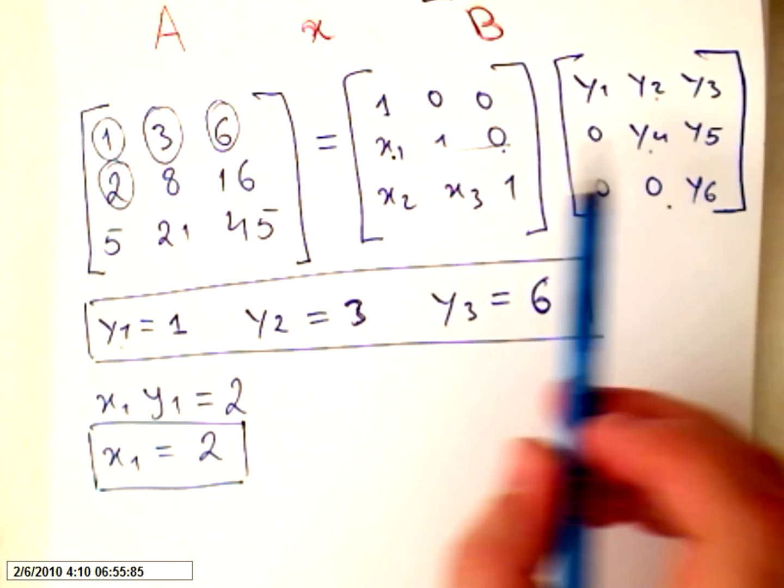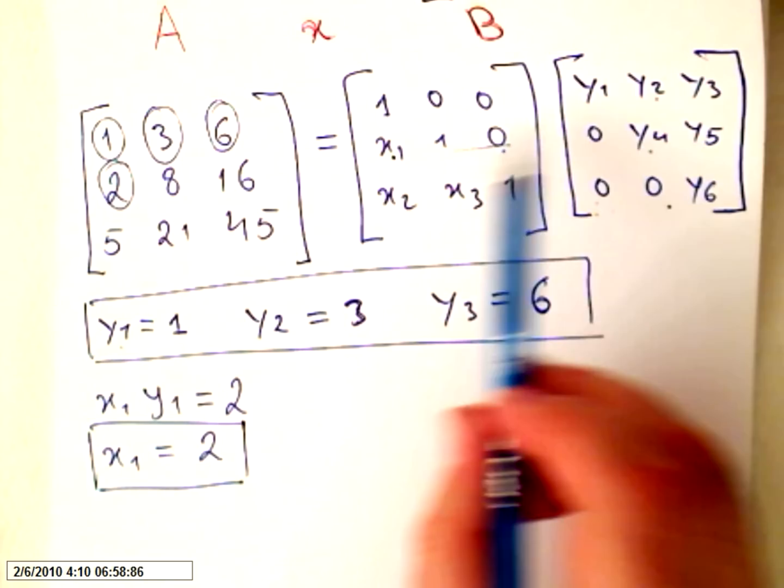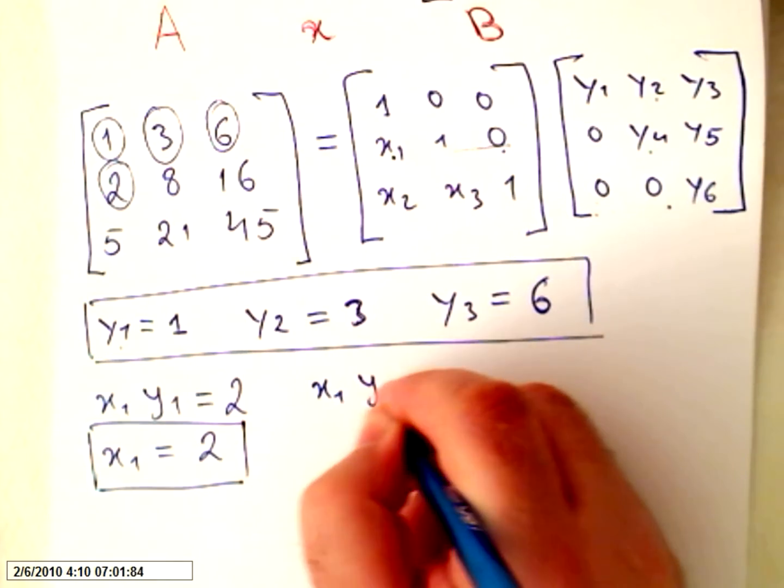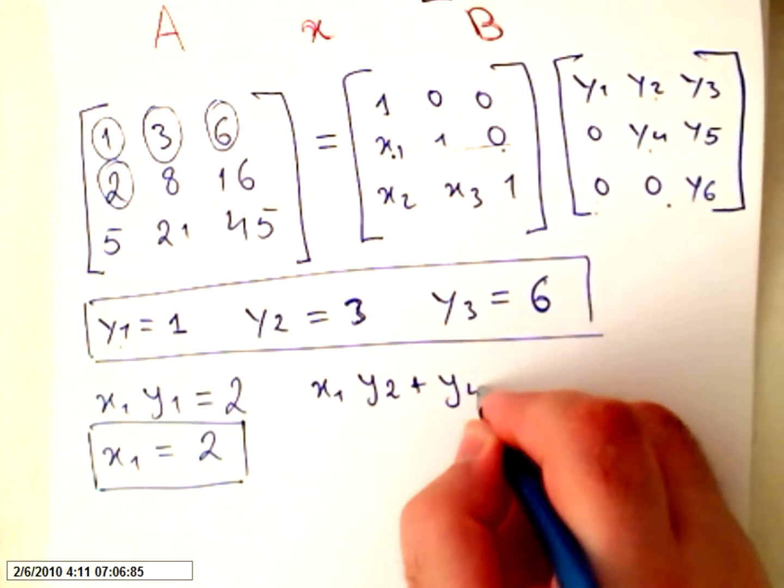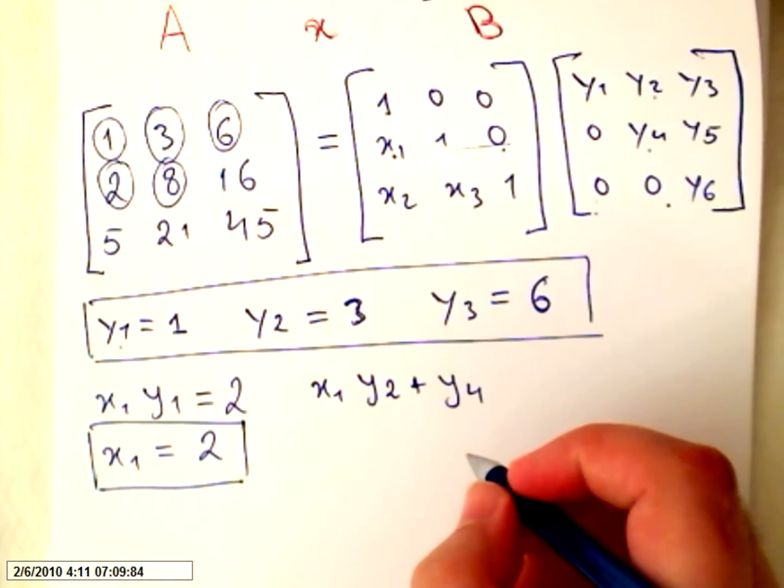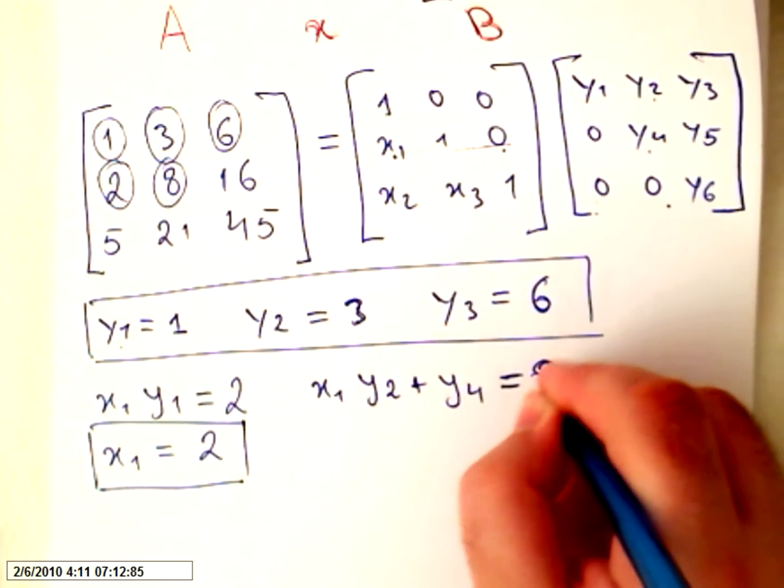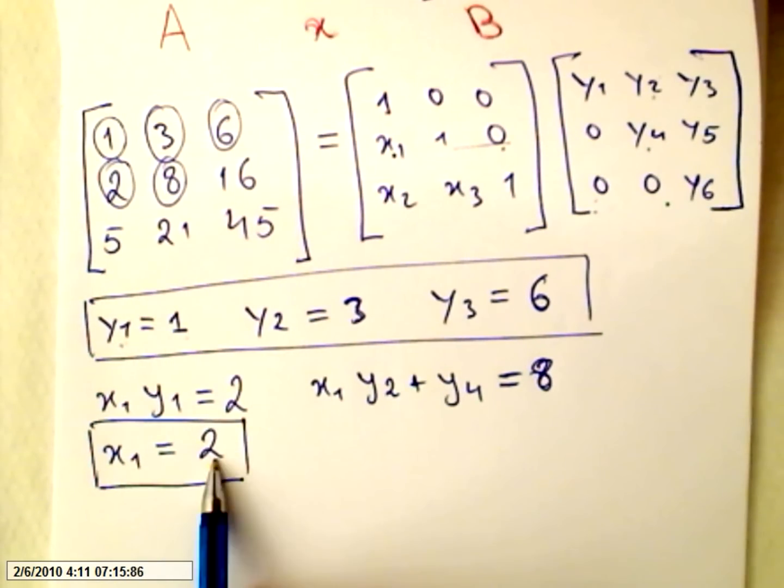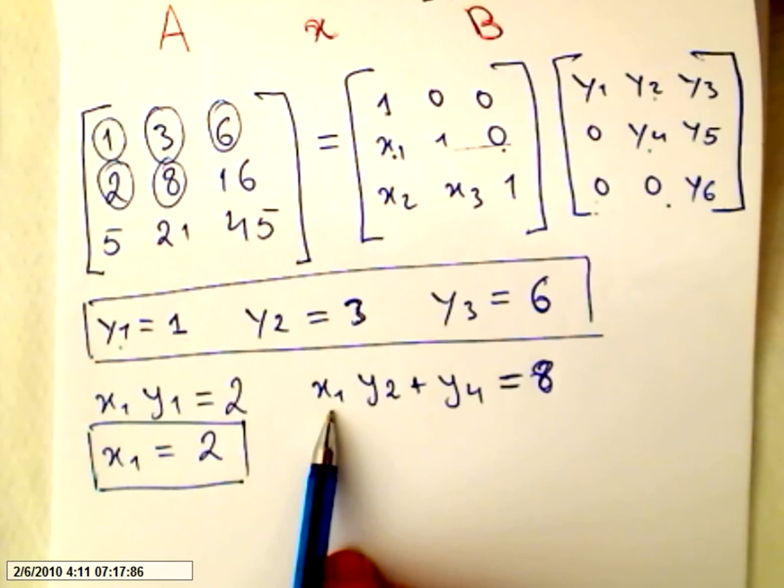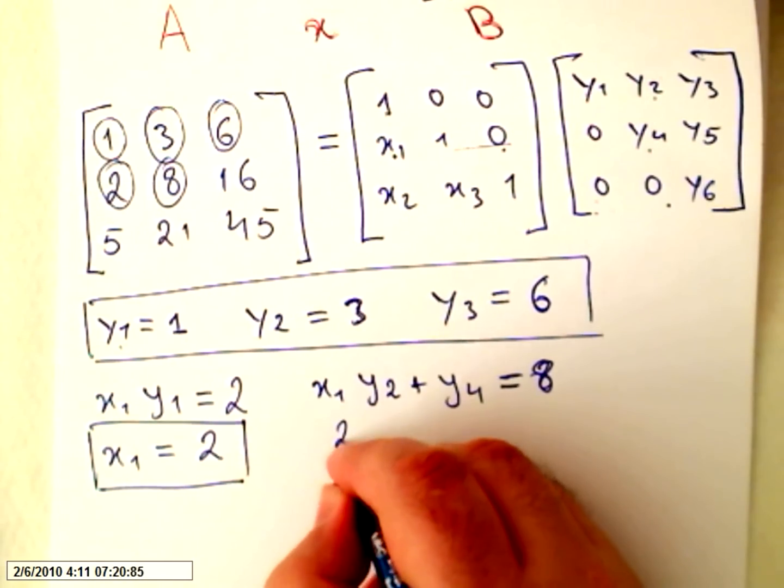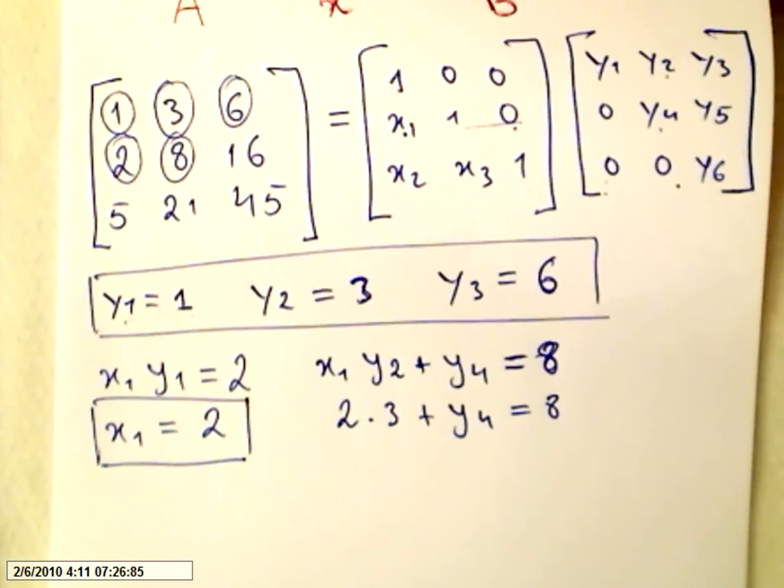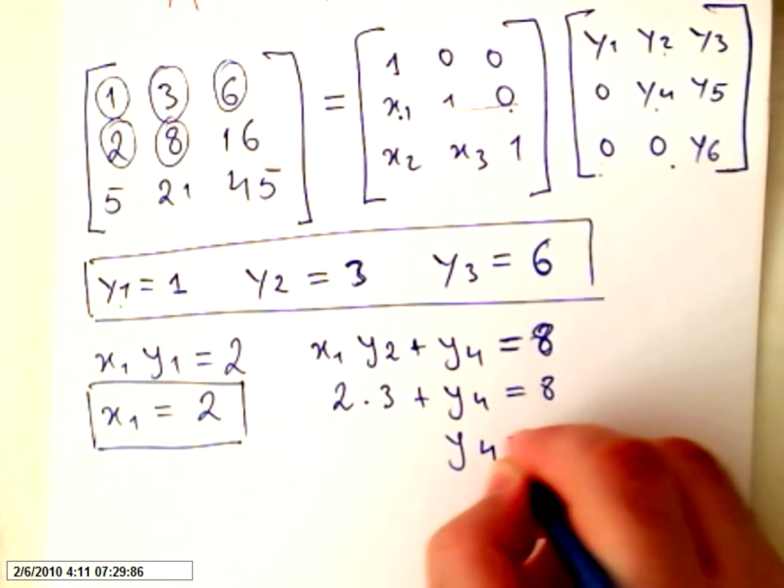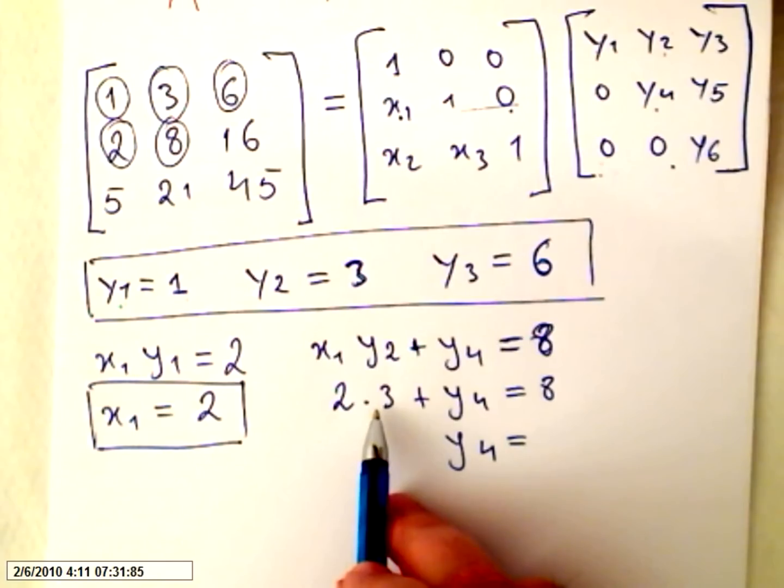Now, second line times the second column, we have x1 times y2, plus y4, and it will equal 8. So, we know x1 is 2, and y2 is 3. So, it will be 2 times 3, plus y4 equals 8. y4 equals 8 minus 6, 2. We have a second value.